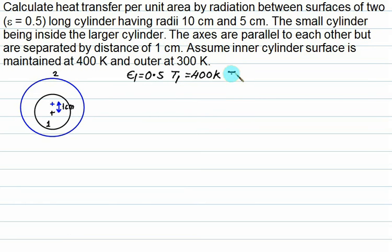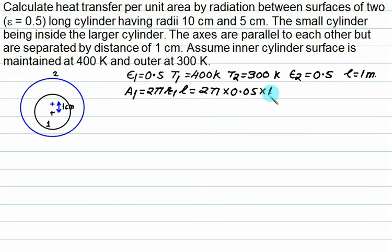Assume inner cylinder and outer cylinder temperatures are 400 and 300 Kelvin. T1 equals 400 and T2 equals 300. Epsilon 1 is 0.5, epsilon 2 is also 0.5. If we assume the length equals to 1 meter temporarily, then what is the area A1? A1 equals 2 pi R1 L. R1 is inner cylinder, it is 0.05 multiplied by length equal to 1. And A2 equals 2 pi R2 L is 2 pi into 0.1 into 1.